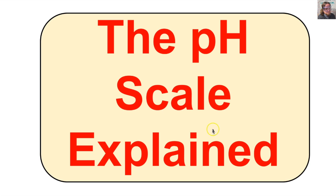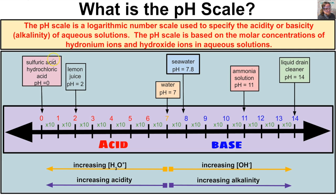Hey, this is Mr. Millings, and in this video we are going to learn about the pH scale. The pH scale is a logarithmic number scale used to specify the acidity or basicity — sometimes referred to as alkalinity — of aqueous solutions. The pH scale is based on the molar concentrations of hydronium ions and hydroxide ions in aqueous solutions, expressed in moles per liter.